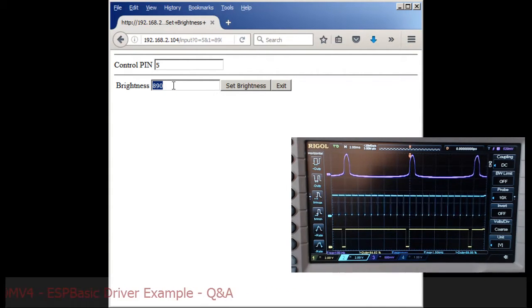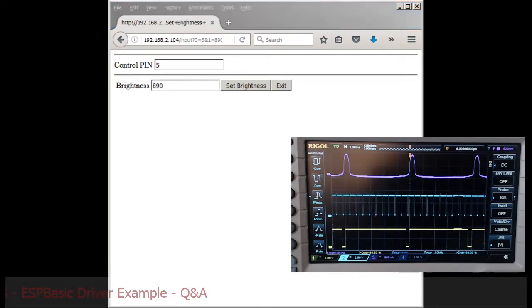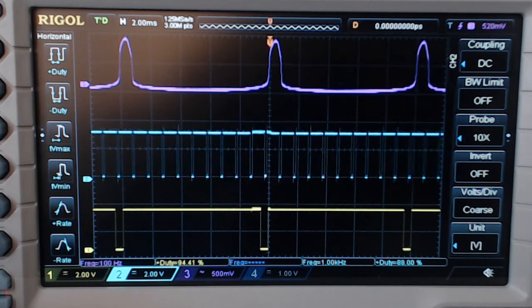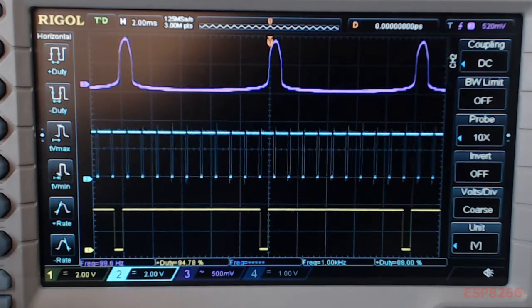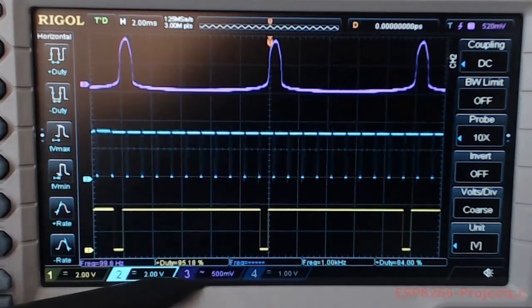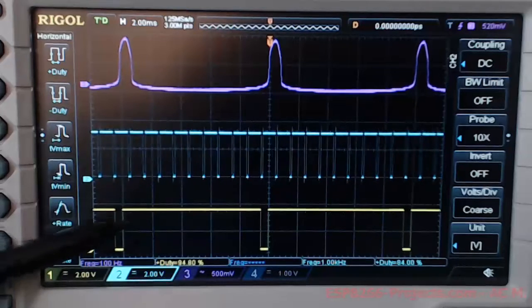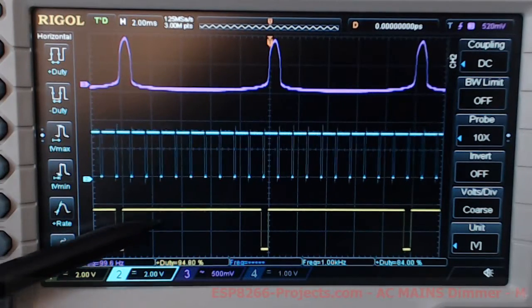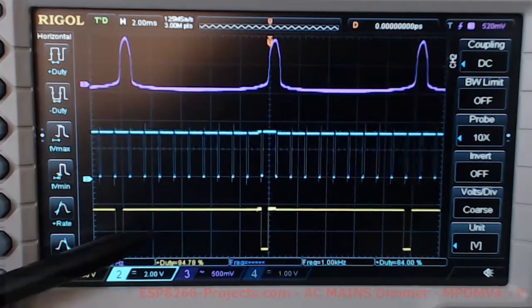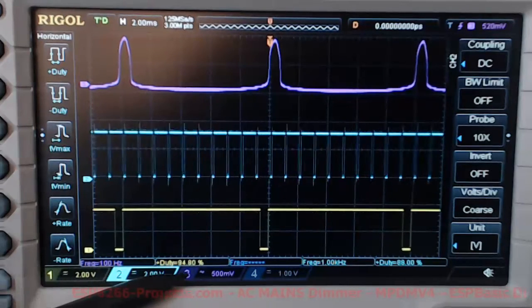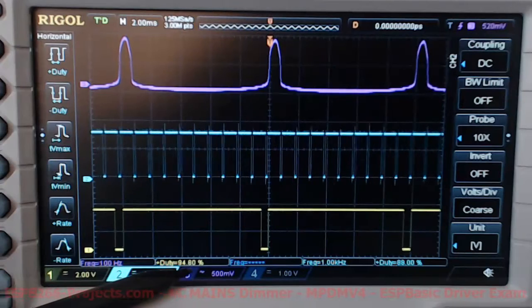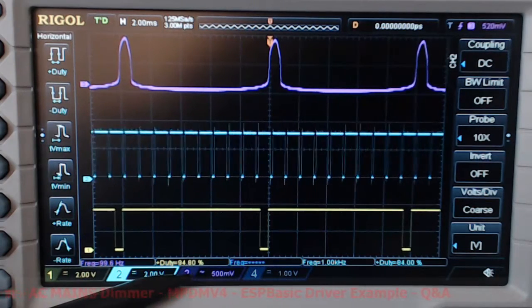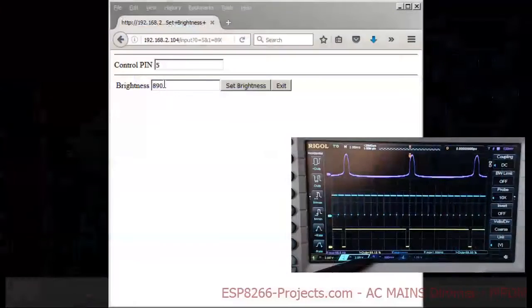As I said, 890 is basically considered the maximum safe level for switching off your light bulb. And if we are looking here on the oscilloscope, you can see with yellow the driver triac output command. And as you can see we have a duty cycle around 95% for brightness value of 890.